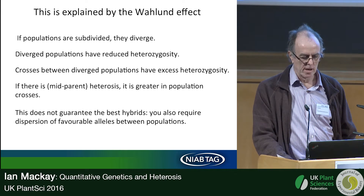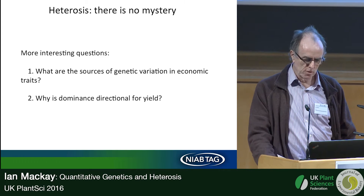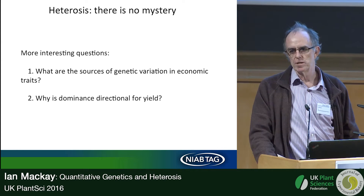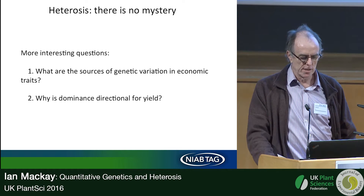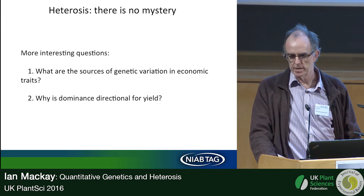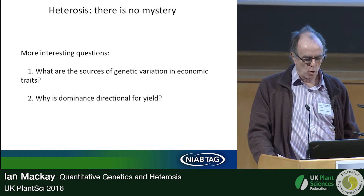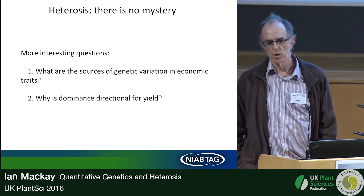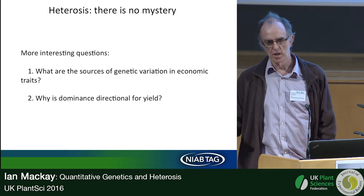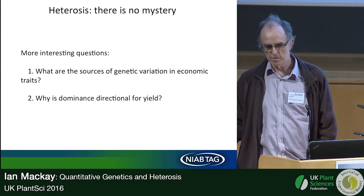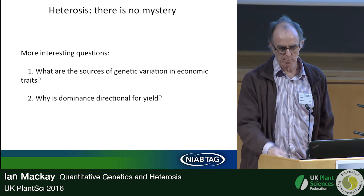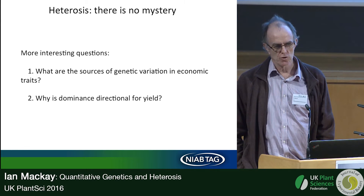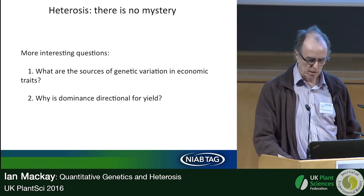There's really no mystery to heterosis. The base explanation that everything else must build on is the dispersion of favorable dominant alleles between the parents. More interesting questions are: what is the general source of genetic variation for economic traits — whether additive or dominance variation — if that can be accounted for, breeders can work more efficiently. And, possibly more academically: why is dominance directional for traits like yield, at least in some species?